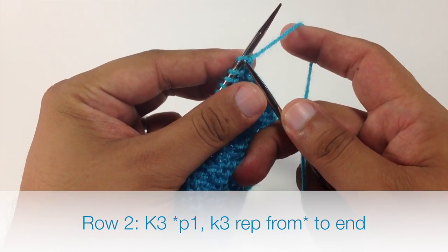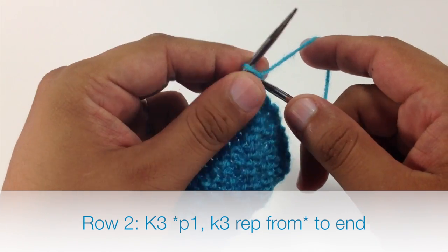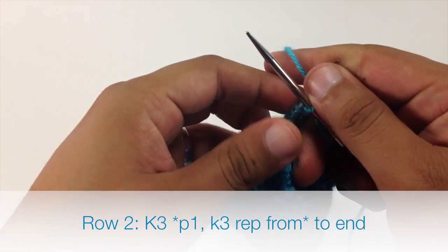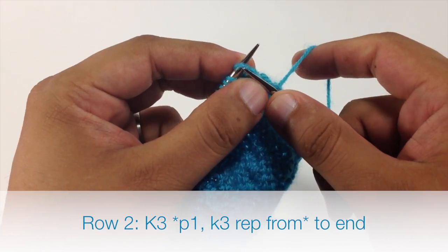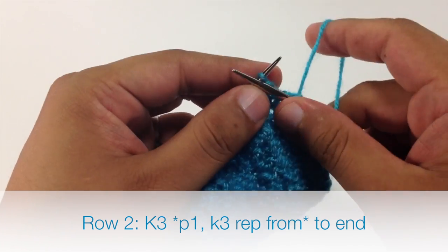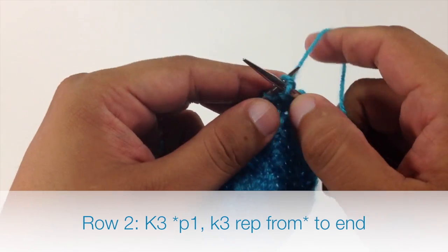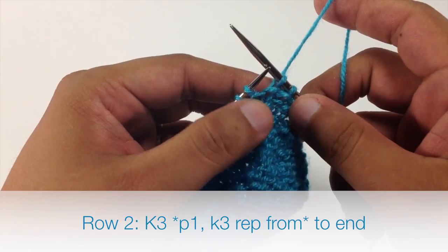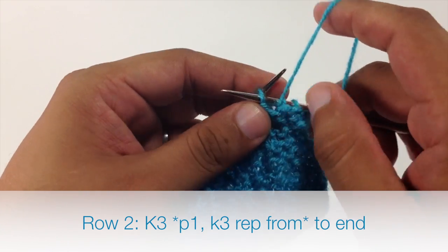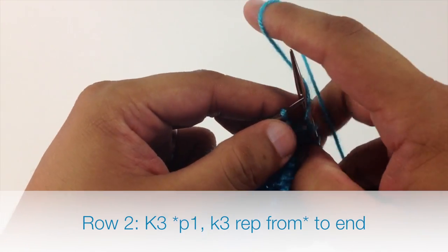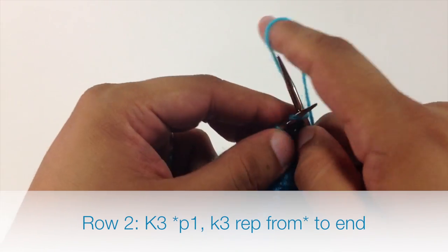Row 2. We are going to begin by knitting 3. Then we are going to start our repeat by purling 1, and we will finish our repeat by knitting 3.